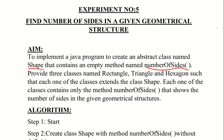An abstract method does not have any body — it does not have any definition. The definition is not in the declaration of the abstract class. One normal class cannot include an abstract method. But an abstract class can include both normal methods as well as abstract methods, as well as a constructor.